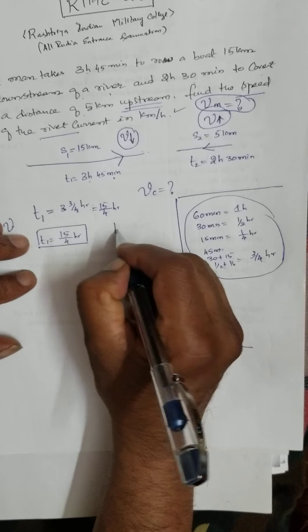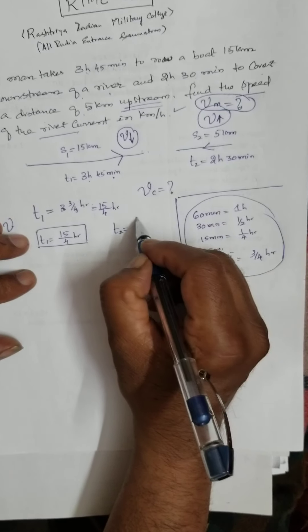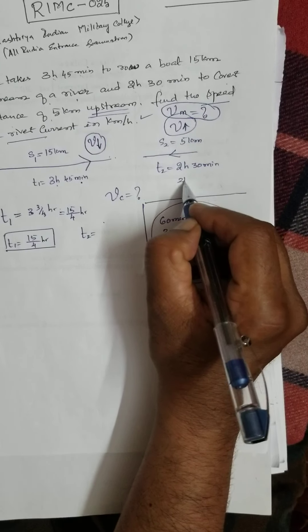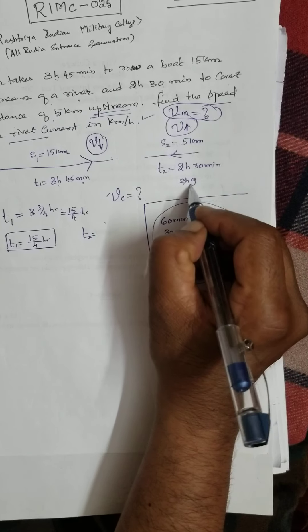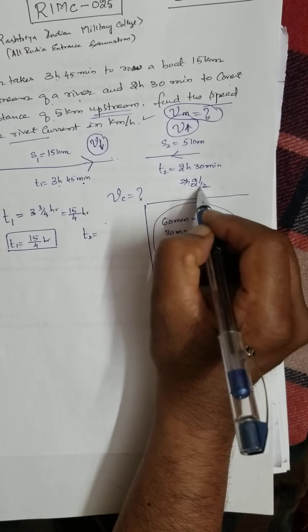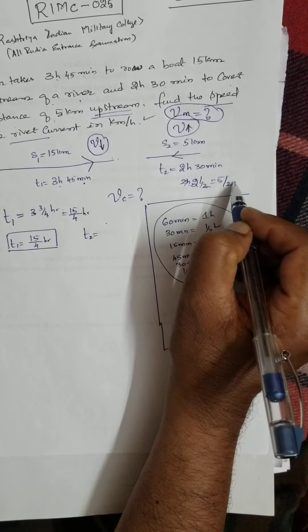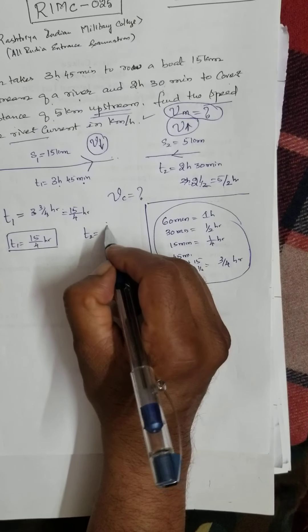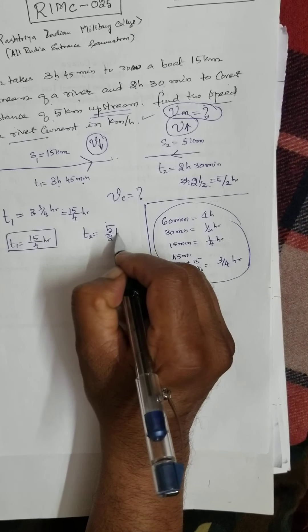Similarly, I can do T2. T2 is what? What is T2? 2 over 2 and a half hour. 22 is of 4 plus 1, 5 by 2 hour. T2 is what? 5 by 2 hour.